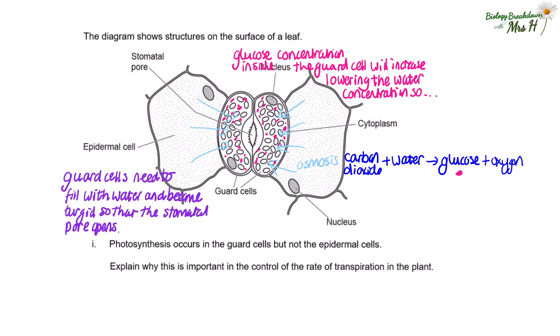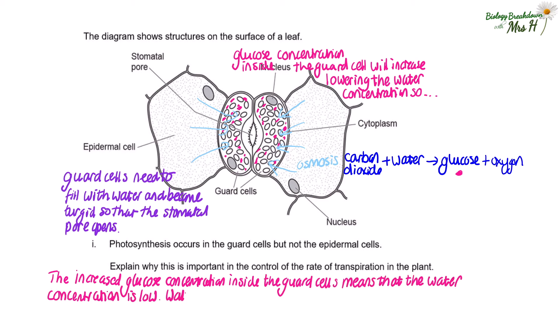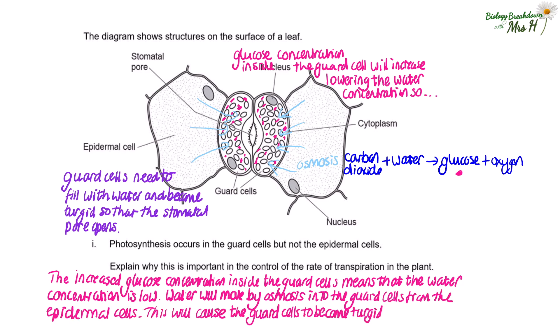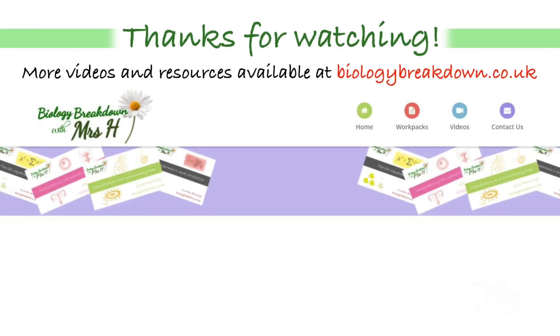So in other words, this is what I tell my students is a hidden osmosis question. You think it's about something else and it's all about osmosis. The increased glucose concentration inside the guard cells means that the water concentration is low. Water will move by osmosis into the guard cells from the epidermal cells. This will cause the guard cells to become turgid and the stomatal pore will open. If you're still with me, well done. That is a really high level question.